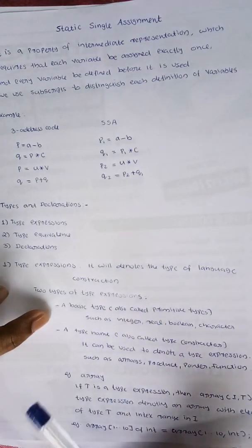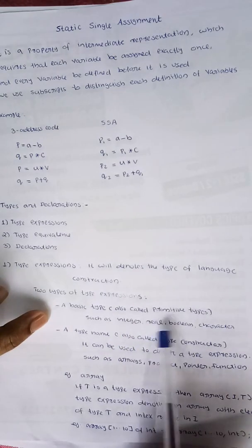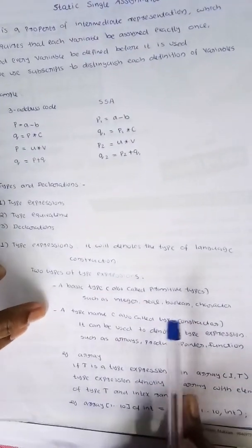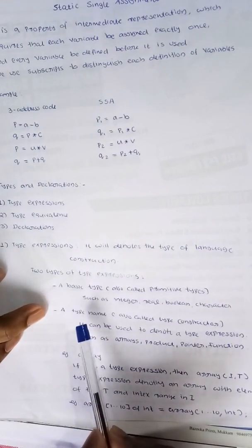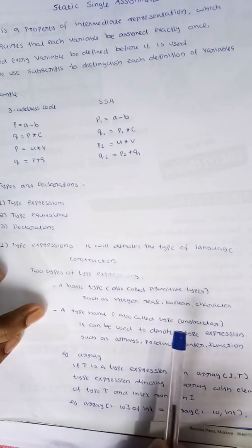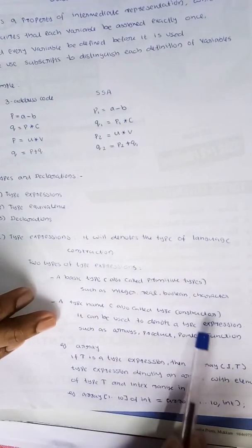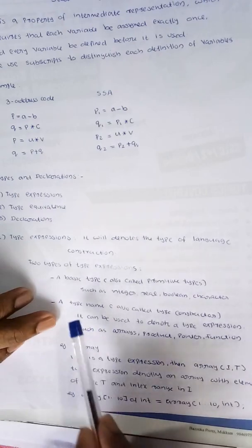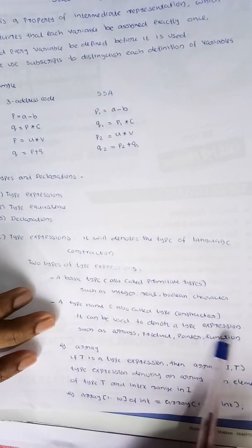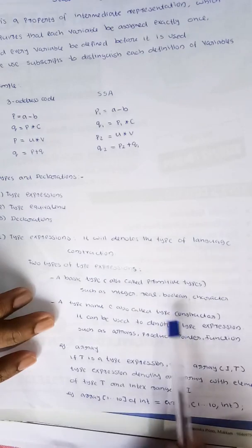Primitive data types and derived data types. Basic types are primitive types: integer, real, boolean, and character. These are basic types. Type expressions also include type names and type constructors.